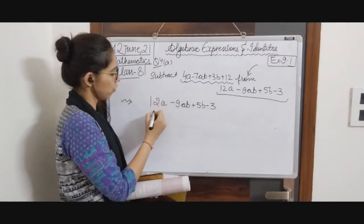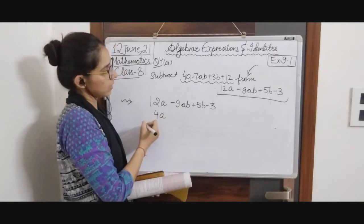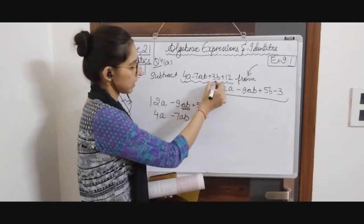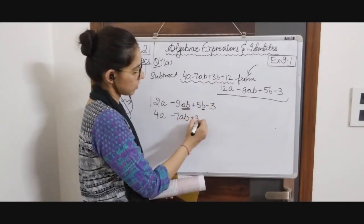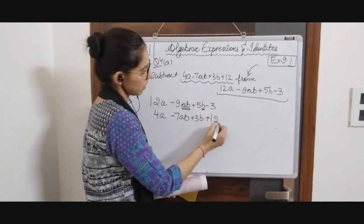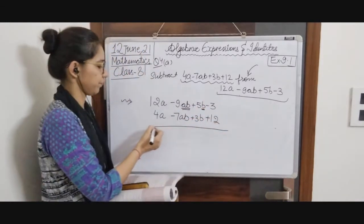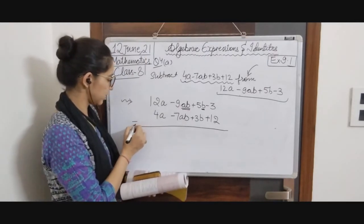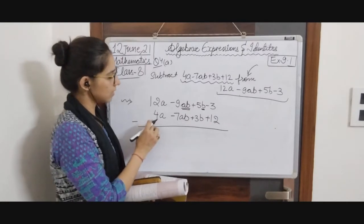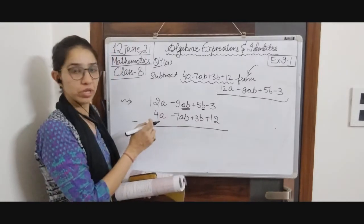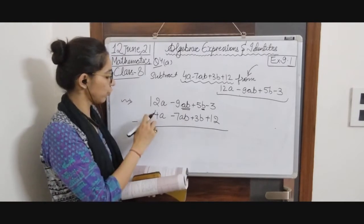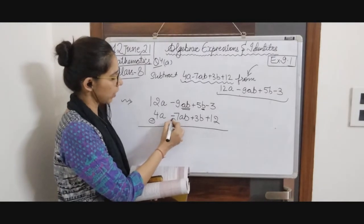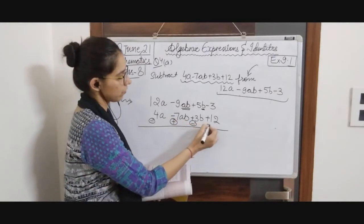First is 4A, so 4A will be written here. Minus 7AB goes below AB. Then plus 3B below B, and plus 12 below the constant. We have written both expressions. Now we subtract — subtract means the signs of the below-written expression will get changed. Positive becomes negative, negative becomes positive, positive becomes negative, and negative becomes positive.